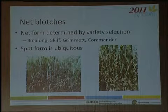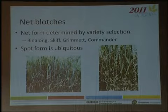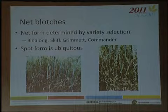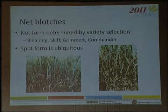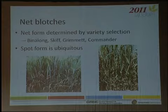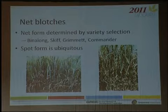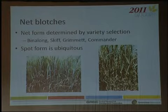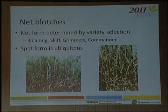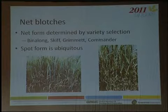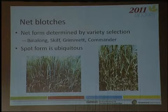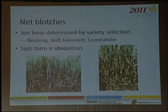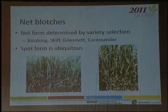Briefly on net blotches: net form net blotch has virtually gone into recess. Once we got Bin along out of the system — it being very susceptible — the situation improved enormously. We still have Skiff and Grimmitt out there in small amounts; they're among the most susceptible we have. Commander coming on stream is susceptible as well. It's not a cause for panic, but it's an awareness thing — if any of those varieties are what your clients are growing, be prepared for an upsurge in net form net blotch.